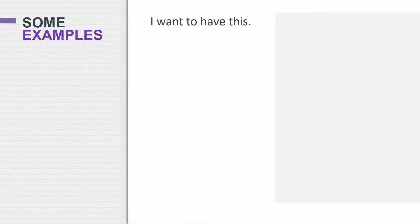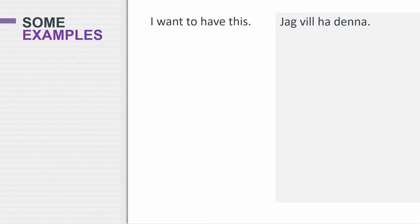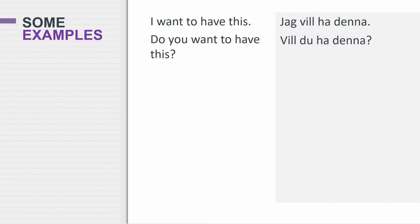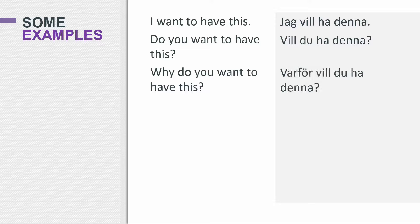How do you say 'I want to have this'? Jag vill ha denna — or detta as well. If you're talking about an object in general, you can say denna. But if you continue the sentence, it has to correspond with the correct en or ett. So jag vill ha denna bil, but jag vill ha detta hus. Varför vill du ha denna? — why do you want to have this?